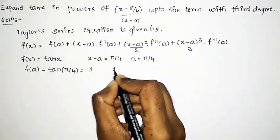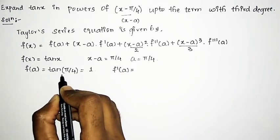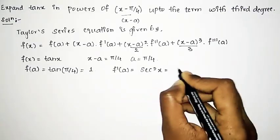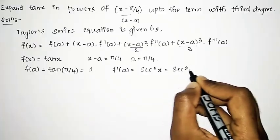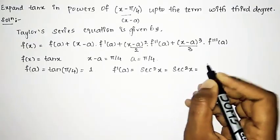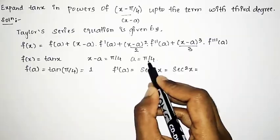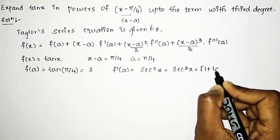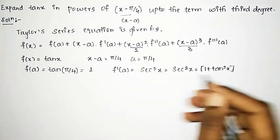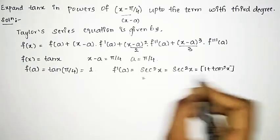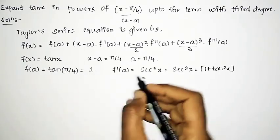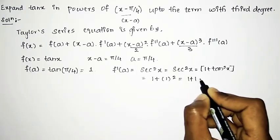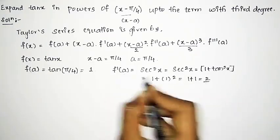Next we need to find f'(a). The differentiation of tan x is sec²x. We can also write sec²x as (1 + tan²x). Substituting a = π/4: f'(a) = 1 + tan²(π/4) = 1 + 1² = 1 + 1 = 2. So the value of f'(a) is 2.